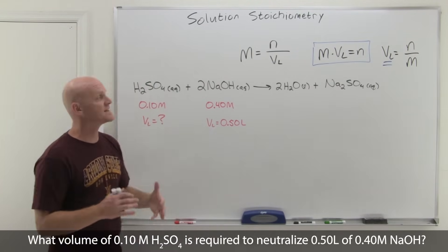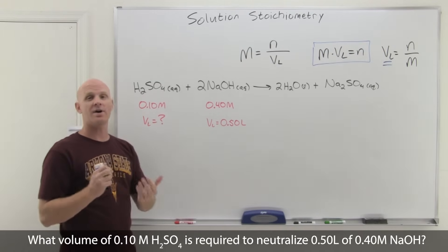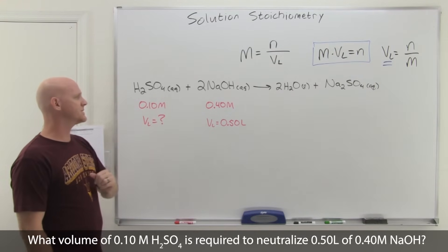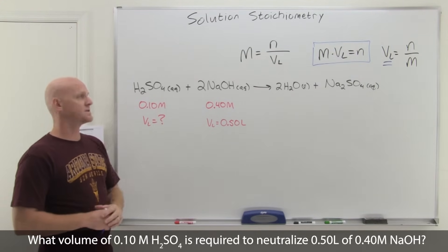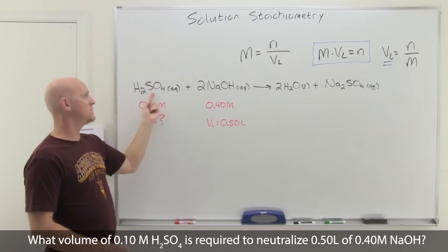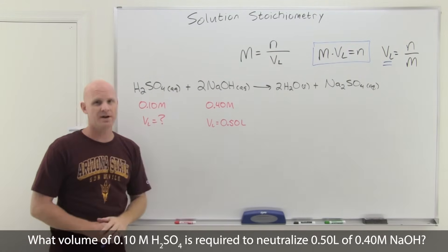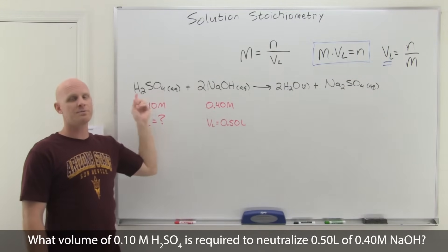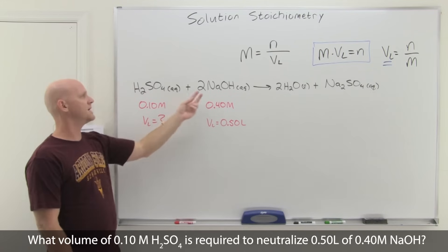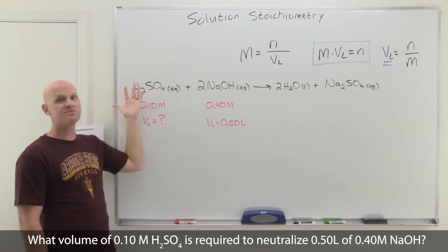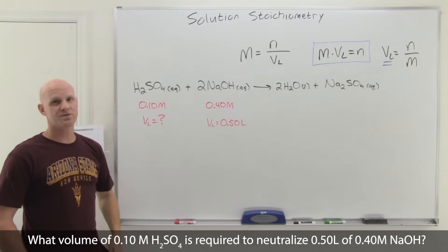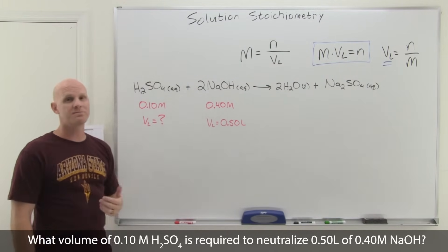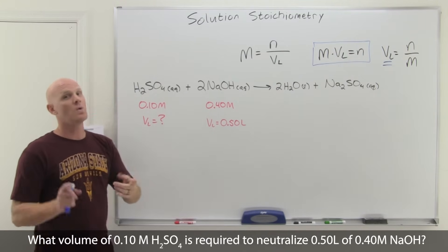In this case it was provided. I want to make sure you realize it didn't have to be because this is one of the reactions you now know how to predict products on and balance. We want to solve for the volume in liters here. Mole-to-mole ratios: we see that it's 1 mole of H2SO4 for every 2 moles of NaOH. If I need to neutralize 10 moles of NaOH, how many moles of H2SO4 are required? Based on that 1 to 2 ratio, 10 moles of NaOH would only require 5 moles of H2SO4.